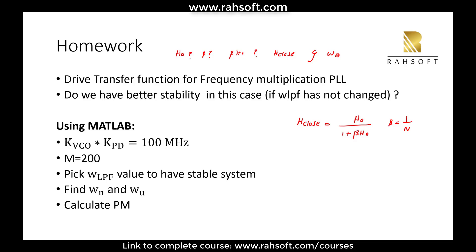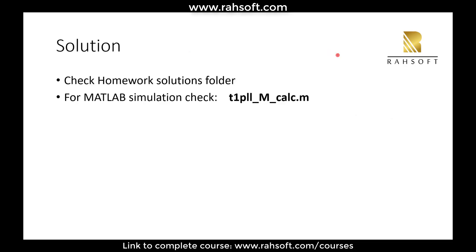You can also use MATLAB for this. For the same system, assume KVCO × KPD = 100 MHz and division ratio N = 200. Find the low-pass filter ω, ωn, and repeat everything using the MATLAB code. I'll provide you the solution, but I strongly suggest you try it yourself first before looking at it — it's very good practice. The solution and the MATLAB file are available in the homework folder: the solution is labeled 'Homework 1 Solution' and the MATLAB file is in the MATLAB folder as 'T1_PLL_M_calculations'.